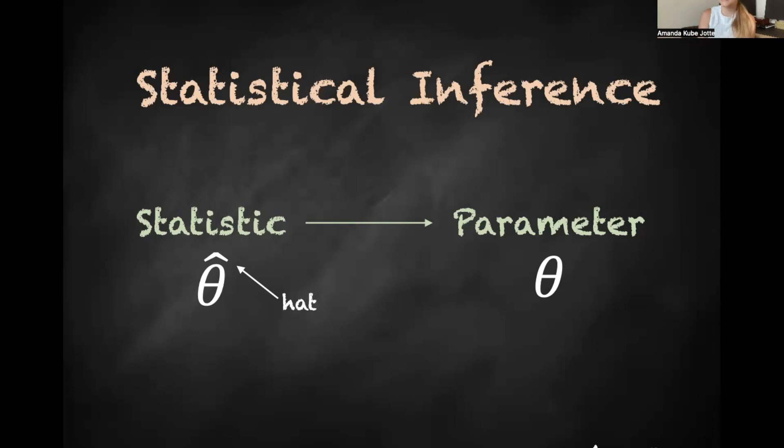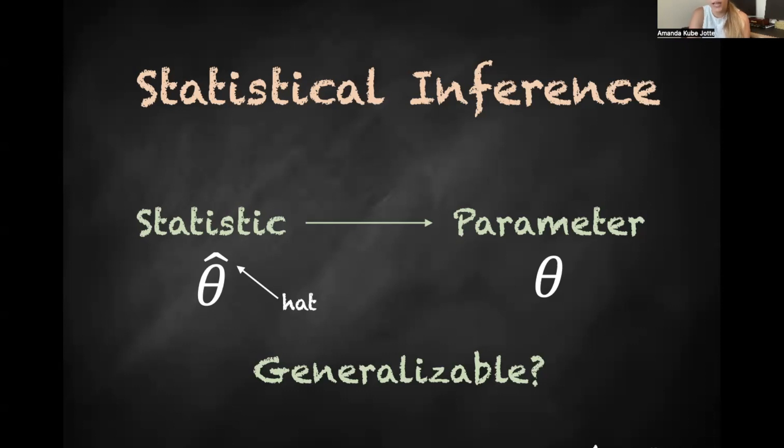The process of statistical inference is the process of understanding how much we can glean from a statistic and how we can generalize that to the broader population, that parameter we want to know about. So this only works if what we're looking at is generalizable. Can we generalize from our sample to our population? And there are some times where what we're doing is not necessarily generalizable.